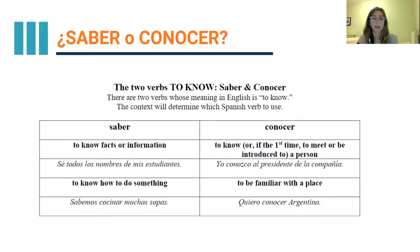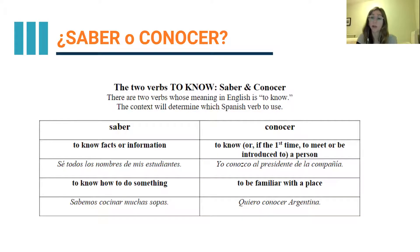On the other hand, we have conocer. Conocer can mean to meet a person or to get to know a place like a city. To get to know a person — yo conozco al presidente — or to be familiar with a place: yo quiero conocer Argentina, or yo conozco una buena taquería. So: saber covers facts, information, or skills, and conocer covers meeting a person, knowing a person, or being familiar with a place.